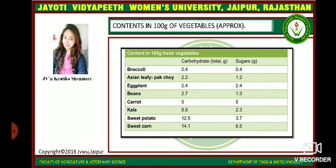Looking at the contents per 100 grams of vegetables: Broccoli has 0.4g of carbohydrate and 0.4g of sugar. Asian leafy pak choi has 2.2g of carbohydrate and 1.2g of sugar. Eggplant has 2.4g of carbohydrate and 2.4g of sugar. Beans have 2.7g and 1.3g. Carrots have 5g of carbohydrate and 5g of sugar. Kale has 8.8g of carbohydrate and 2.3g of sugar. Sweet potato has 12.5g of carbohydrate and 3.7g of sugar. Sweet corn has 14.1g of carbohydrate and 6.5g of sugar.